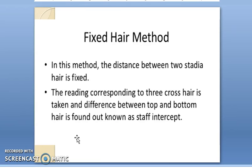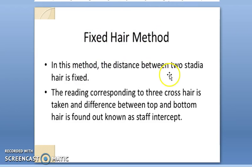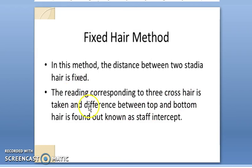Coming to the fixed hair method — from the name itself, we can say the two stadia hairs are fixed. The two stadia hairs in the diaphragm are fixed in the case of the fixed hair method. The readings corresponding to the three cross hairs — top, bottom, and middle — are taken, and the difference between the top and bottom gives the staff intercept.